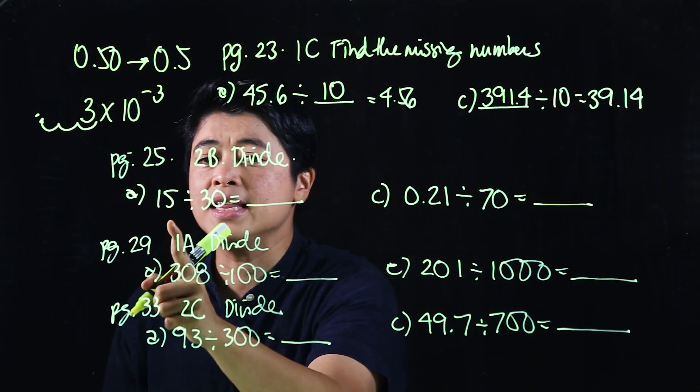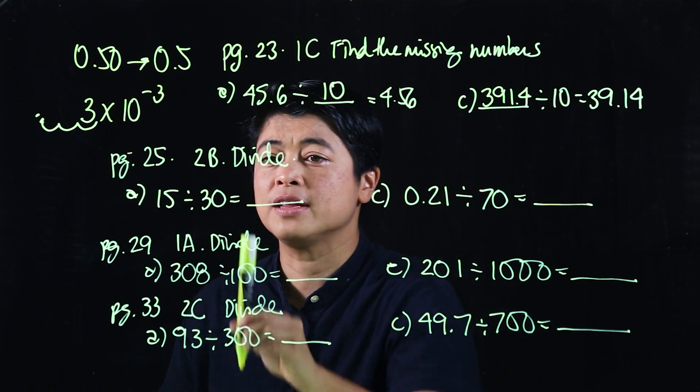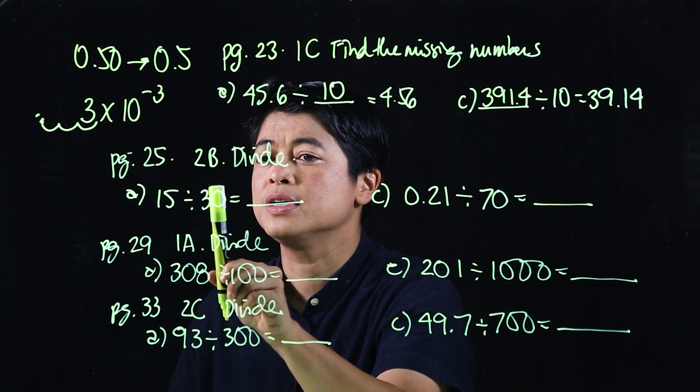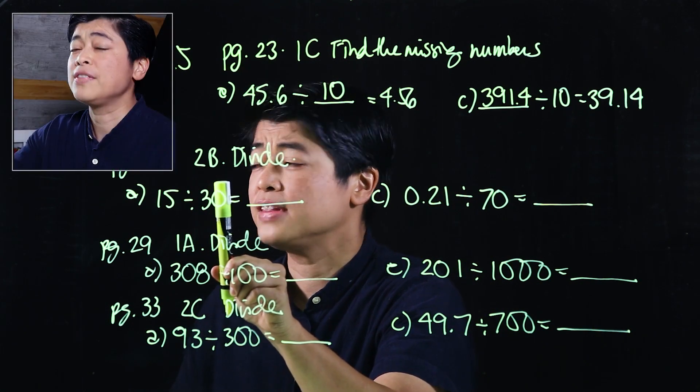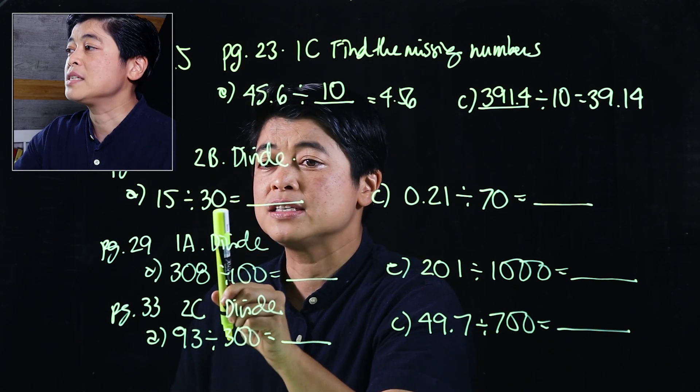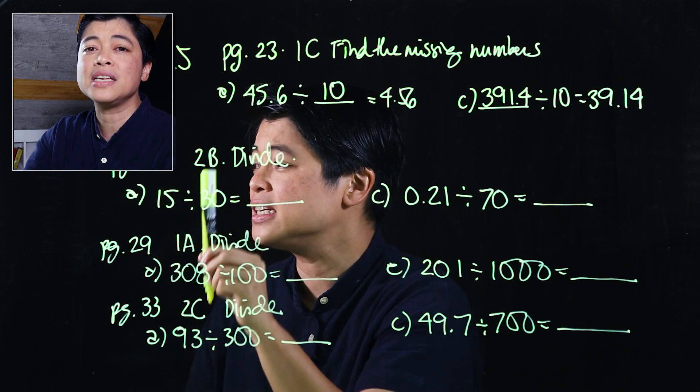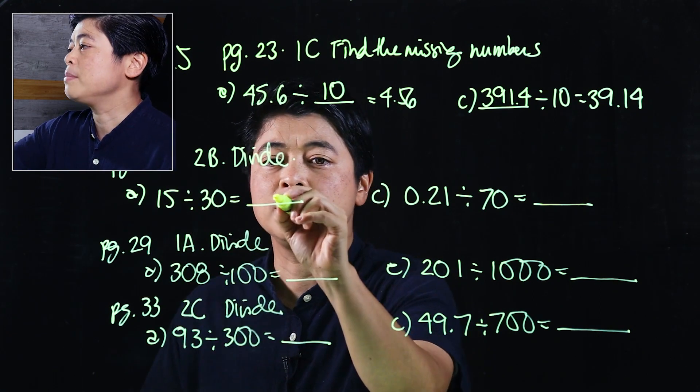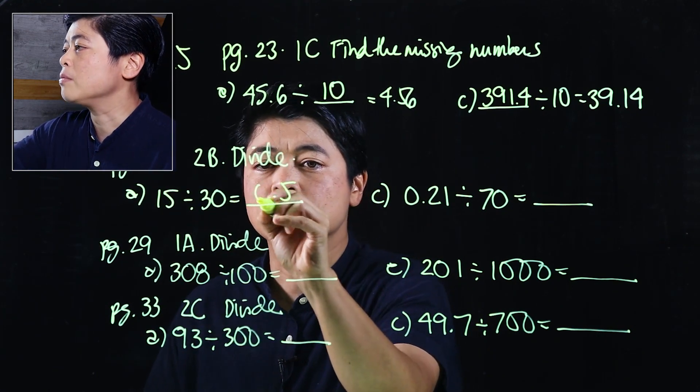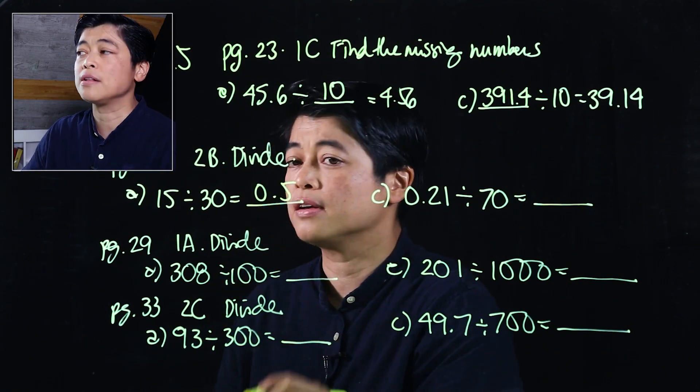Okay, now when we divide, again, as I mentioned earlier, we divide as if there's no 0. So that means that's 15 divided by 3 is 5. But since there's one 0, I move the decimal place over one place to the left. So that means that would be 0.5, but we usually put a 0 in front of the decimal.